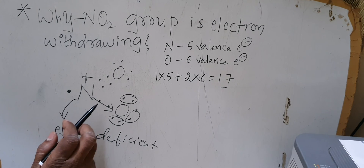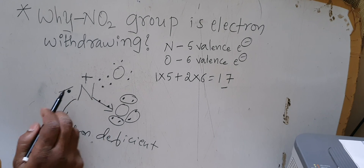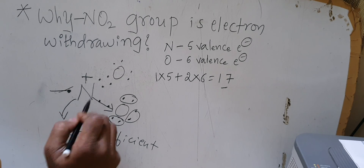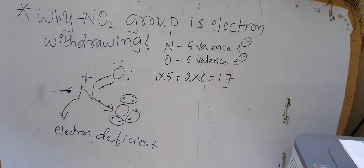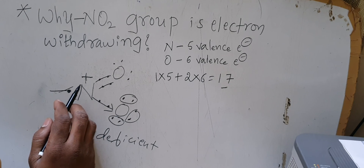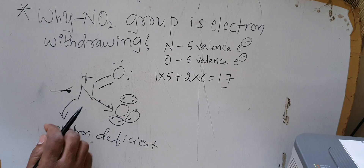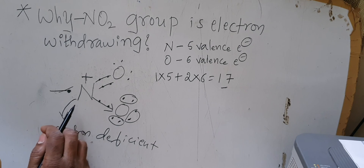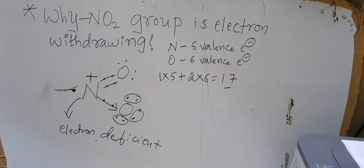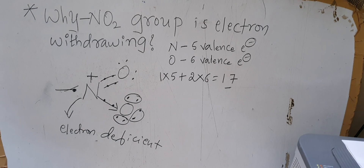Nitrogen now has four bonds around it — one, two, three, four — and since nitrogen is forming four bonds it carries a positive charge with no lone pairs remaining. Because this nitrogen atom is electron deficient, the whole nitro group is electron deficient. That is why the nitro group is an electron withdrawing group. I hope you have understood. Thanks for watching.